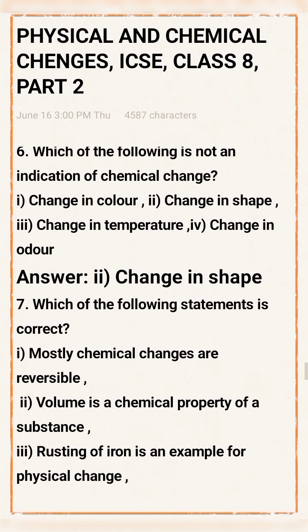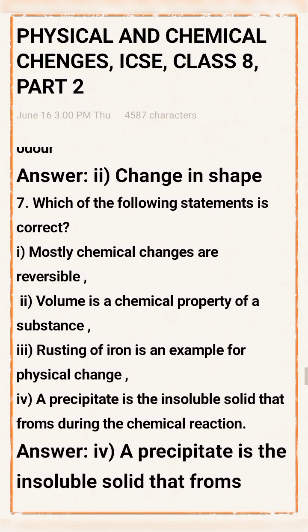Question 7: Which of the following statements is correct? Option 1: Mostly chemical changes are reversible. Option 2: Volume is a chemical property of a substance. Option 3: Rusting of iron is an example of physical change. Option 4: A precipitate is the insoluble solid that forms during a chemical reaction. Answer: Option 4.